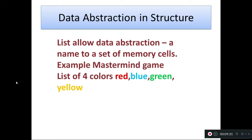And then data abstraction in structure. In first year you learned structure — this year structure can be defined here also. A list allows data abstraction. You assign a name to a set of memory cells. Some data can be stored in memory cells. For example, if you play a game — mastermind game — there is a list of 4 colors: red, blue, green, yellow. Here in data abstraction, the 4 colors are the memory cells.